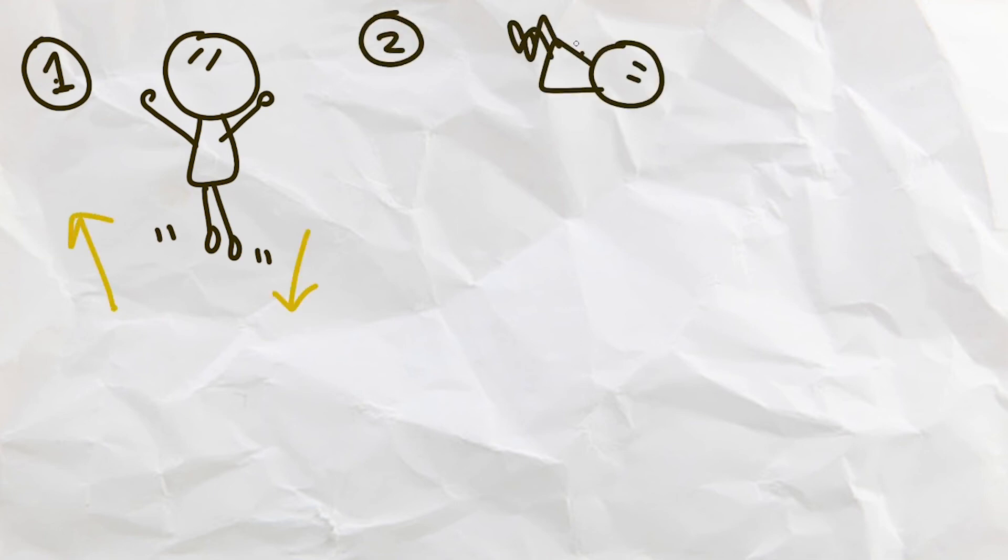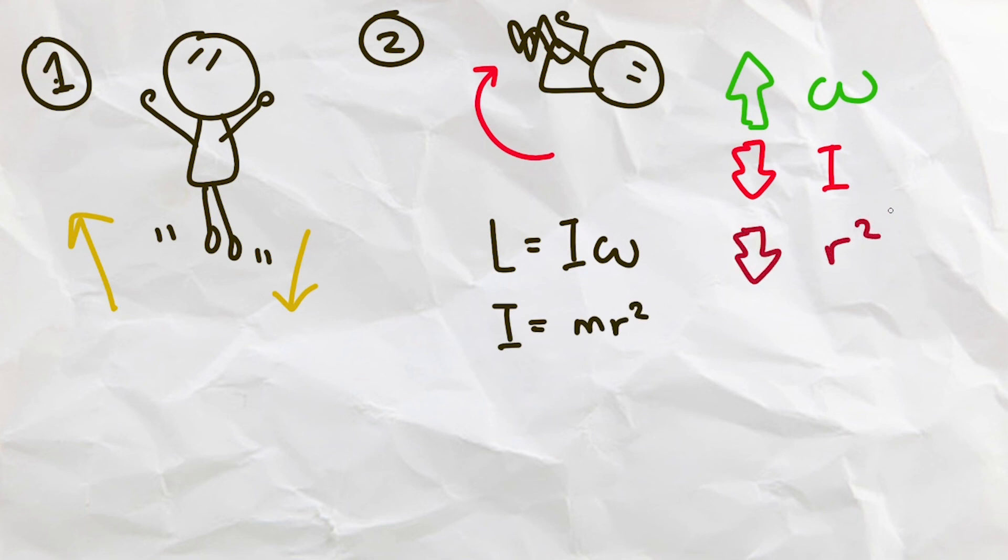And there we have it! To complete a backflip scientifically, we first need to launch ourselves off the ground using Newton's third law. Then increase your angular velocity to be fast enough to complete a flip in the air. As we learned from the angular momentum formula, in order to increase the angular velocity, we need to decrease our moment of inertia, which can be done by tucking your limbs in to decrease the radius, or the distance from the axis of rotation. I hope that all of you learned something new and interesting today. Thank you for watching, and good luck with everything!